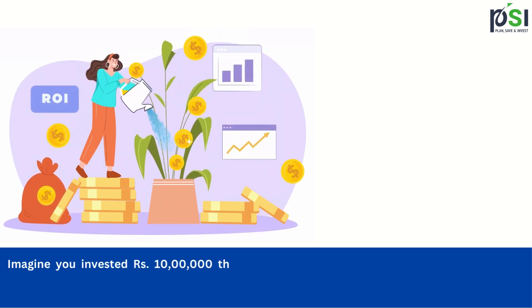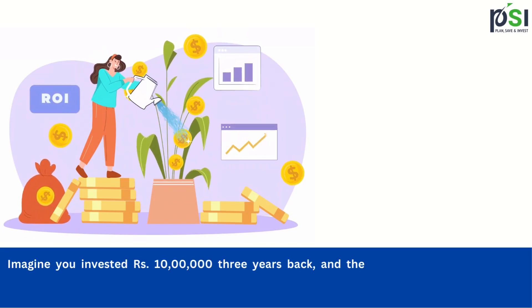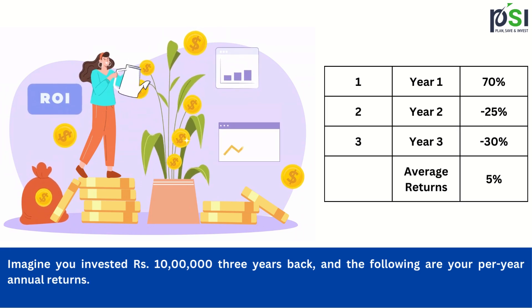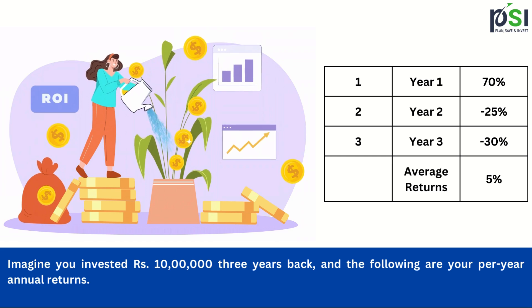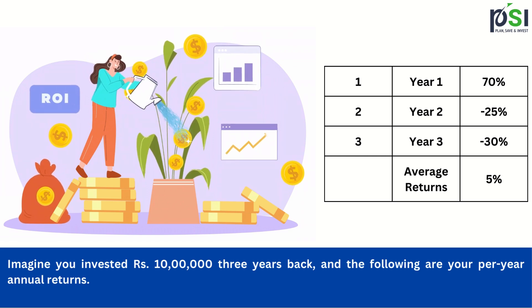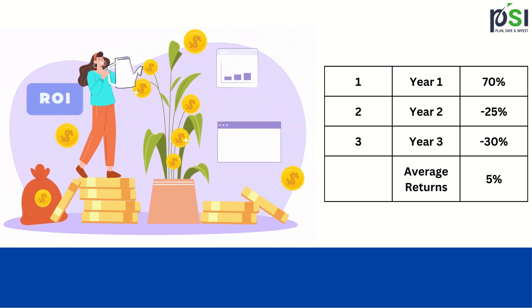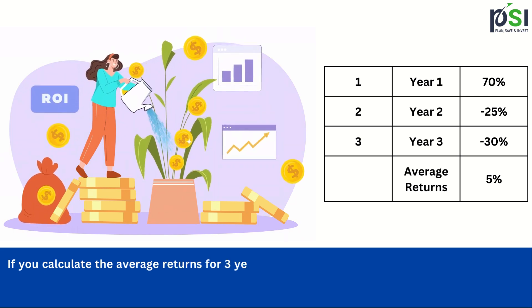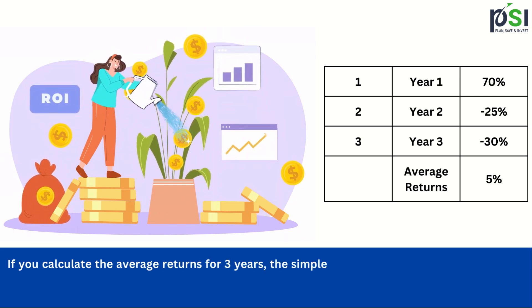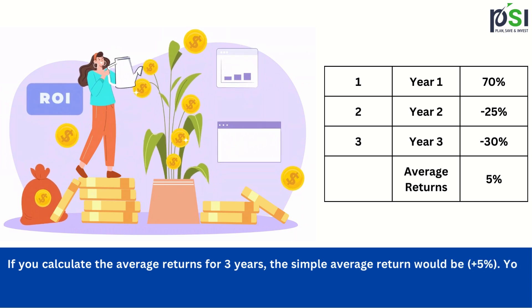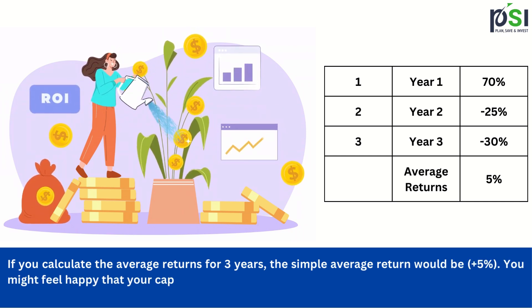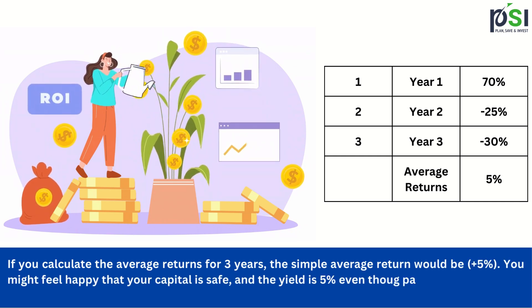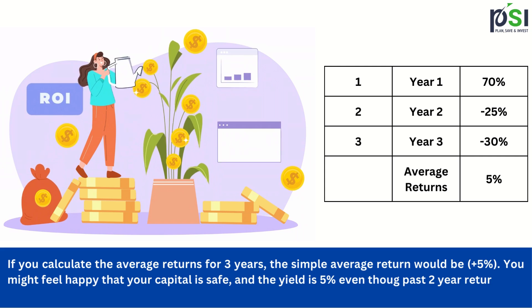Imagine you invested Rs 10 lakhs 3 years back and the following are your per annum returns: Year 1 70%, Year 2 minus 25%, Year 3 minus 30%. If you calculate the average returns for 3 years, the simple average return would be plus 5%. You might feel that capital is safe and the yield is plus 5%, even though the past 2 years' returns are bad.